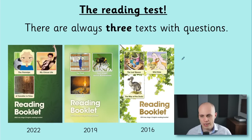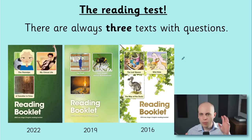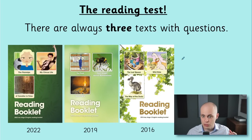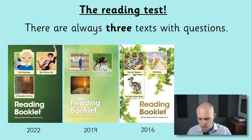First of all, a bit of information. The reading test always consists of three separate texts. You get one hour to do the test, which means approximately 20 minutes per paper. What usually happens is the first text is a little bit easier, so it might take a bit less than 20 minutes, giving you some extra time for that last text, which is usually a bit harder. We've got some different papers from across the years and all of them have three different texts.